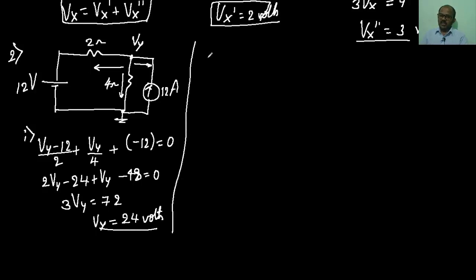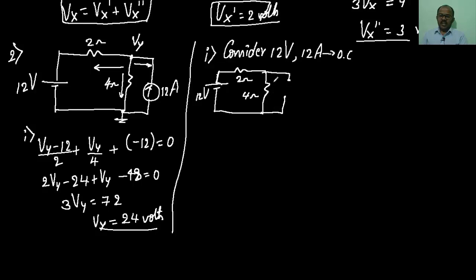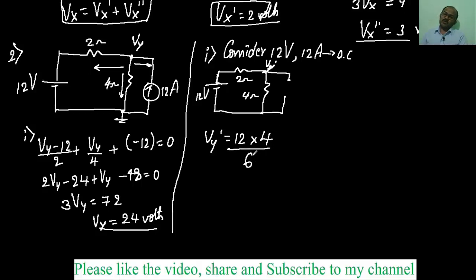Let me verify using superposition theorem. Case 1: consider only the 12V battery; treat the 12A current source as an open circuit. The remaining circuit is the 12V battery in series with 2 ohms and a 4-ohm resistor. Using the voltage divider rule: Vy′ = 12 × 4/(2 + 4) = 12 × 4/6 = 8 volts.